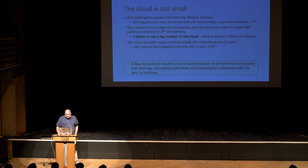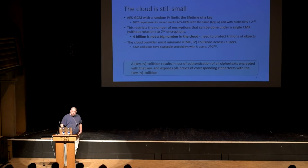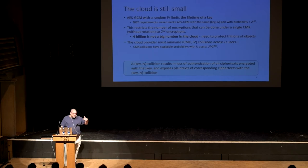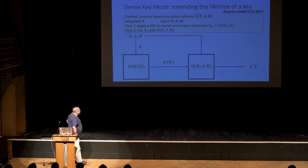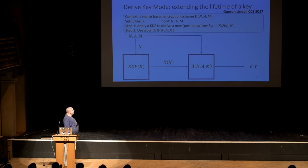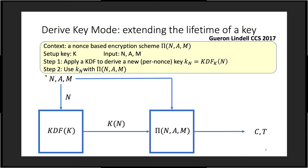A collision on the CMK has negligible probability. If you are really selecting a random 256-bit key and you have U users, the probability is U² over 2^{257}. We're good here — this is not the problem. The problem is what happens with the customer master key being used by each of the users for many encryptions. So I'm going to describe a general concept — joint work I did with Yuda Lindel from Bar-Ilan University, presented at CCS recently — which we call the derived key mode.